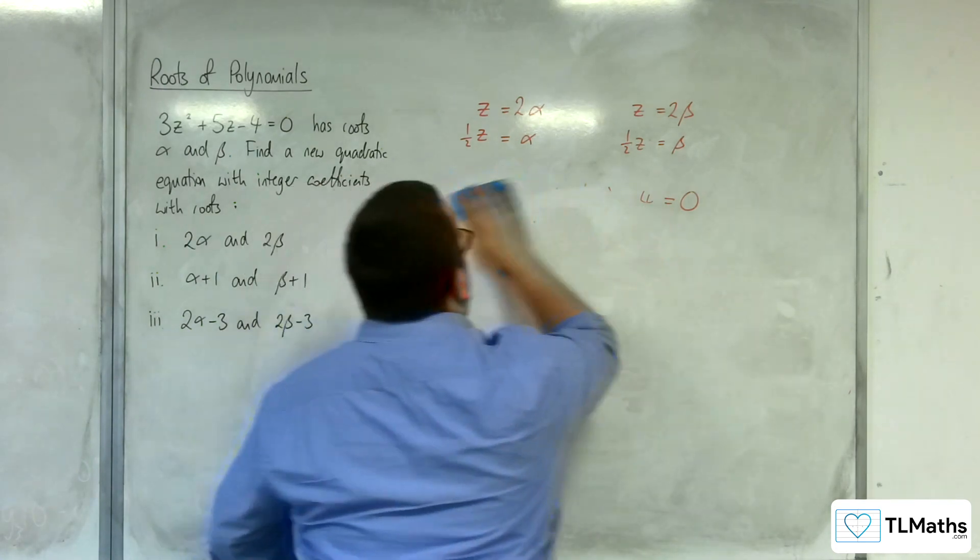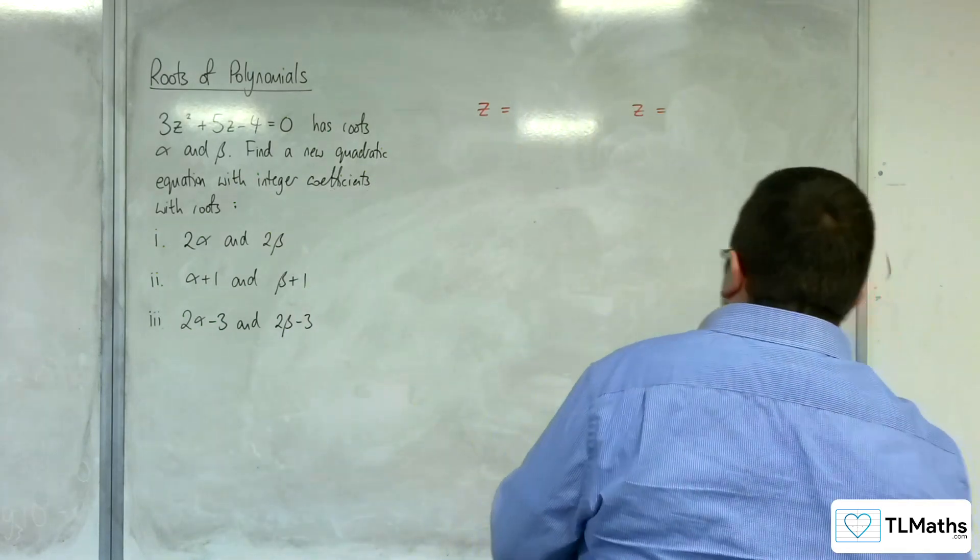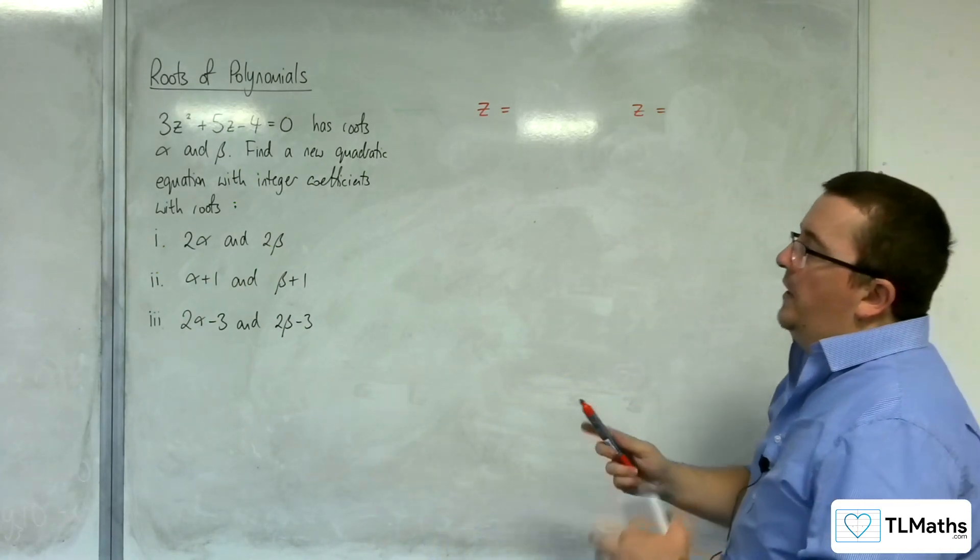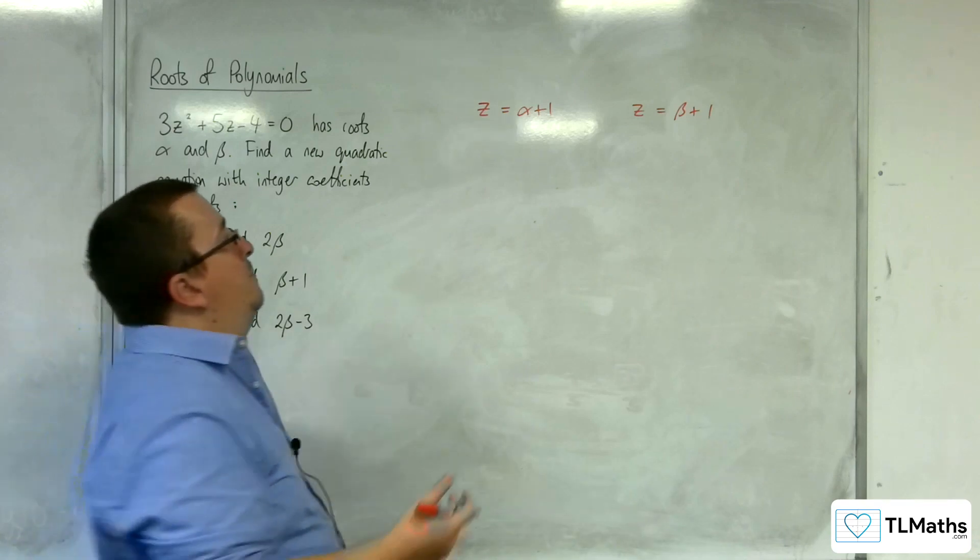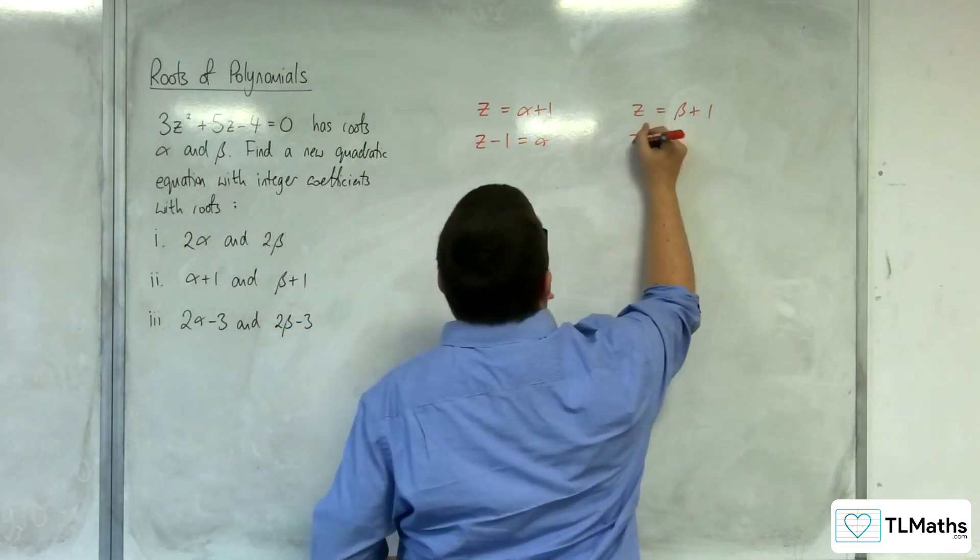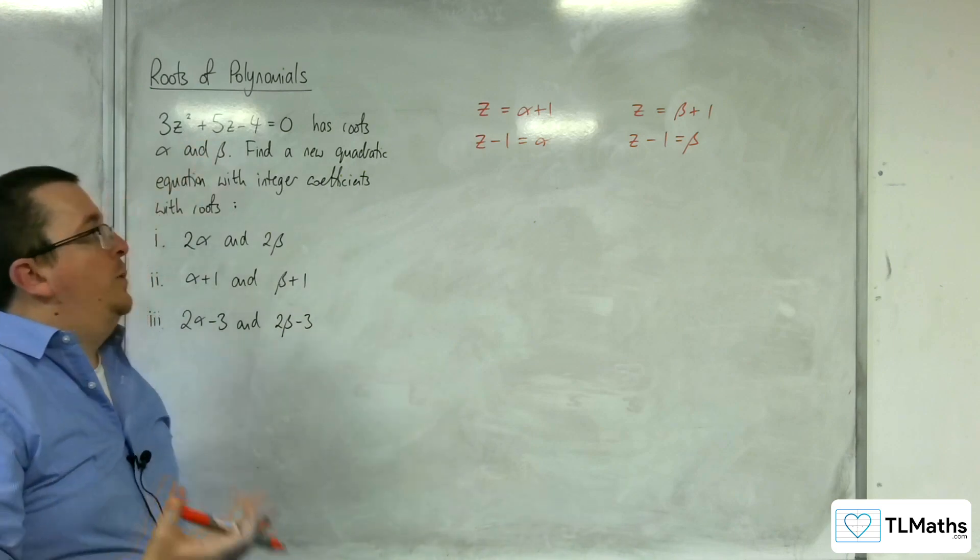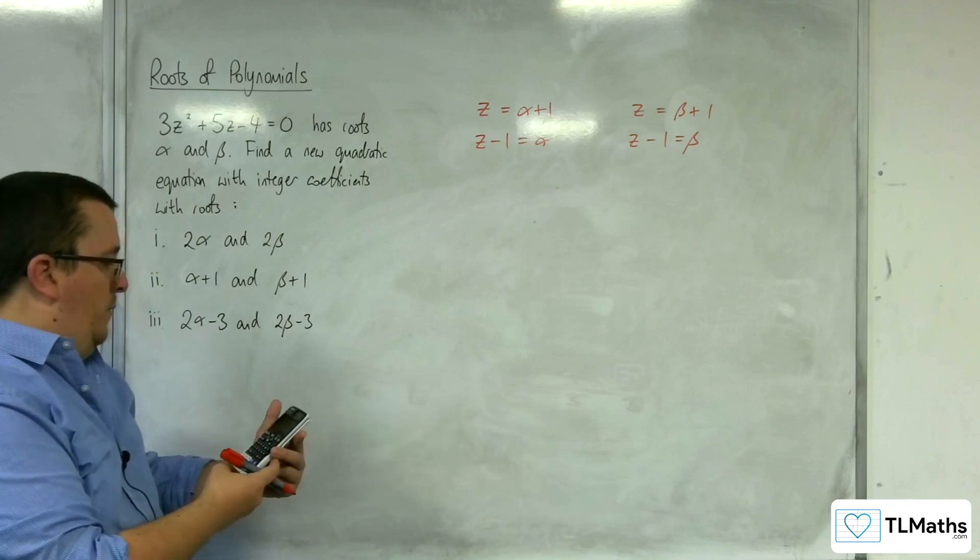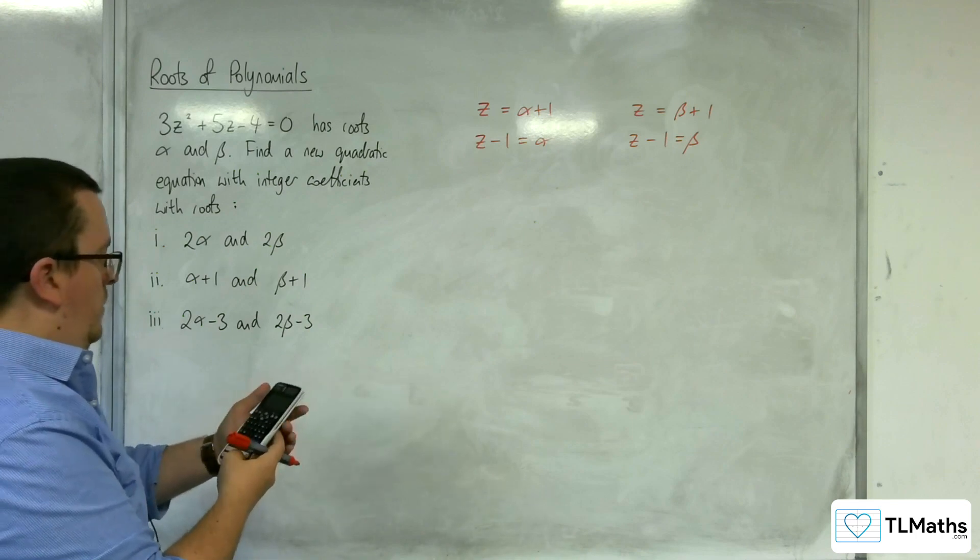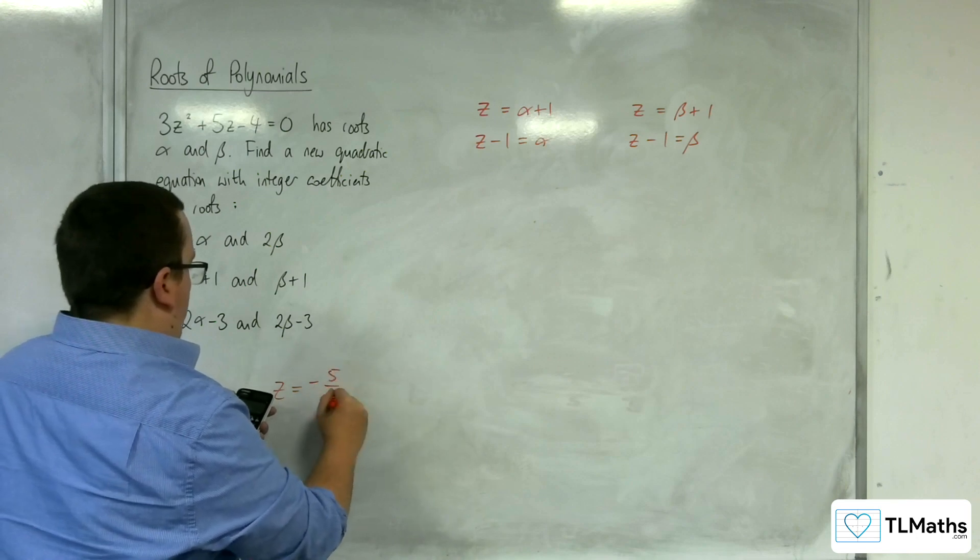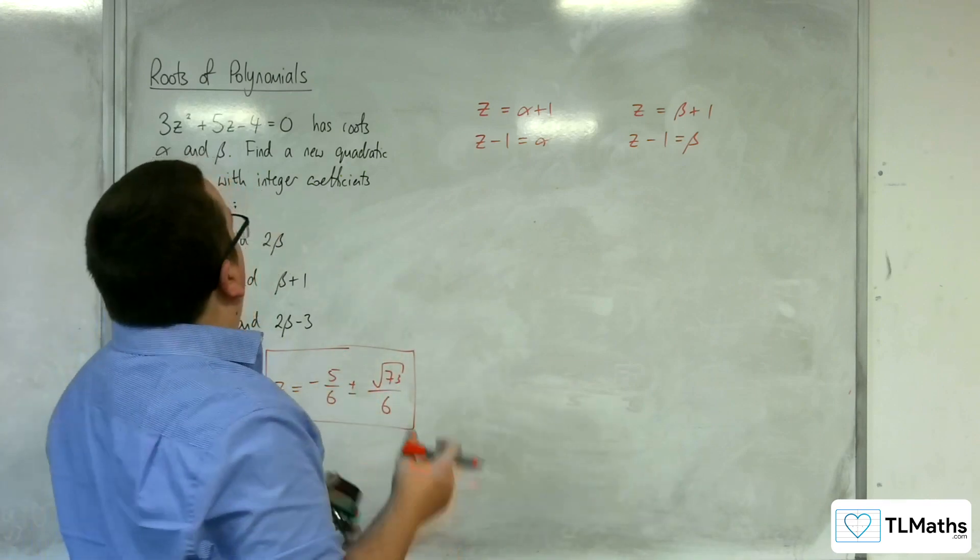So let's have a look at the second one. So we're now saying that we need z to be alpha plus 1 and beta plus 1. So if I subtract 1 from both of those, then if I were to substitute z minus 1 into this, then I would get the new equation that I need. So 3, 5, minus 4. So that was minus 5 sixths plus or minus root 73 over 6. So we're going to substitute z minus 1 in.